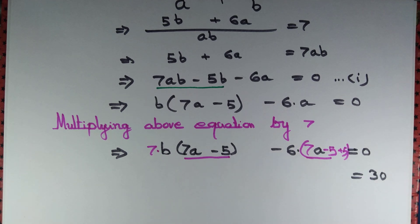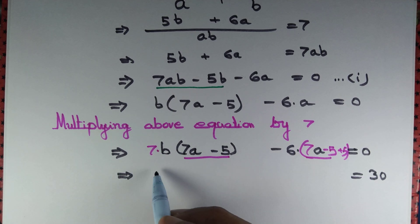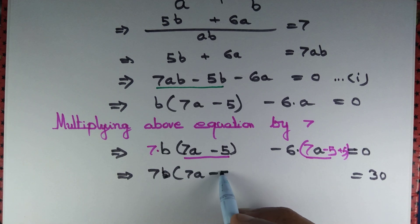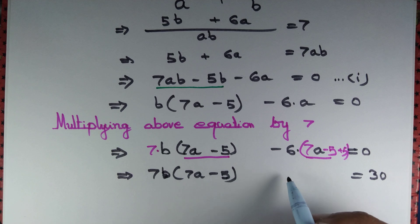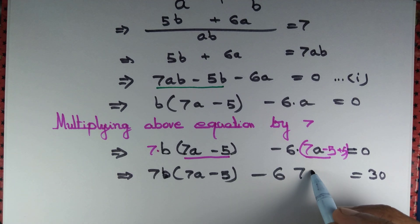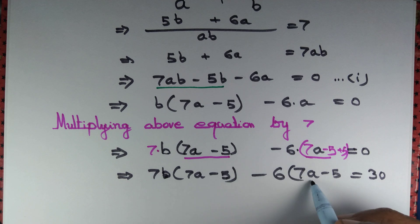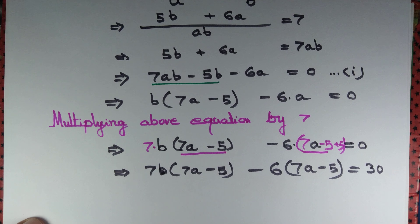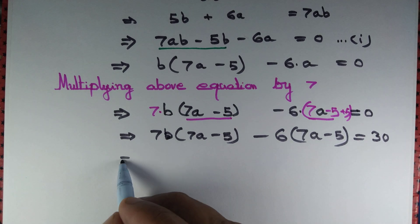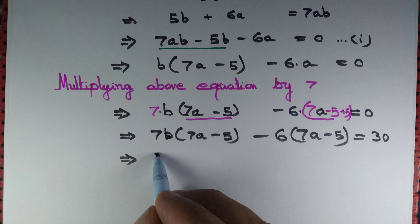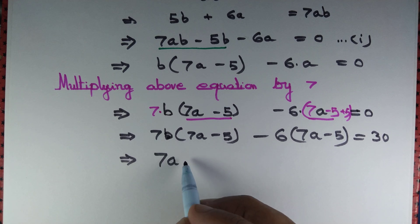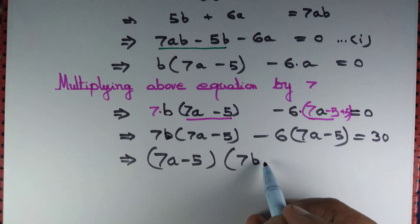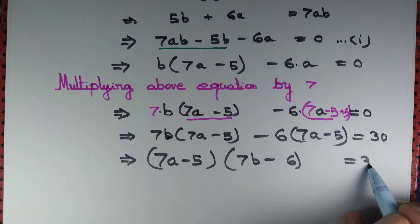On the left-hand side we have 7b(7a - 5) - 6(7a - 5) = 30. Taking (7a - 5) common, we obtain (7a - 5)(7b - 6) = 30.